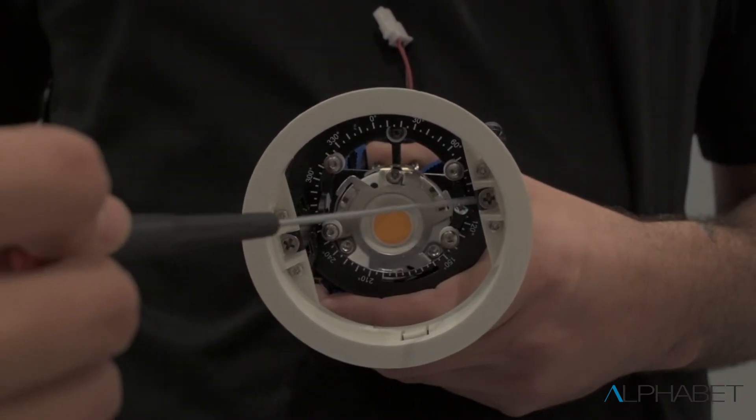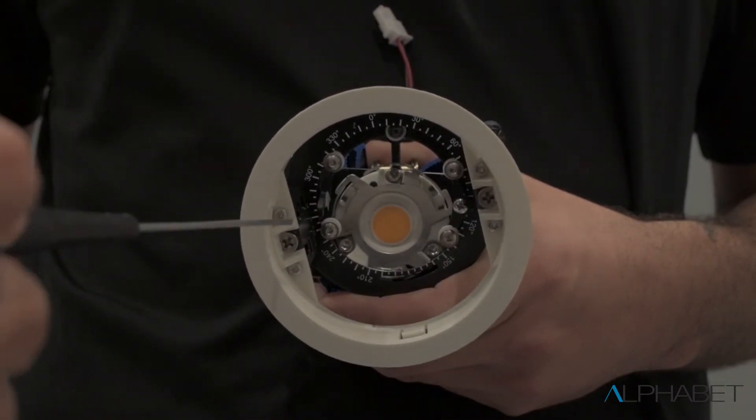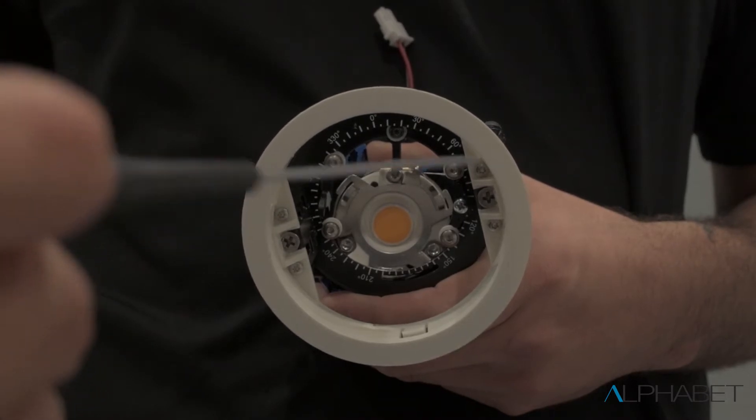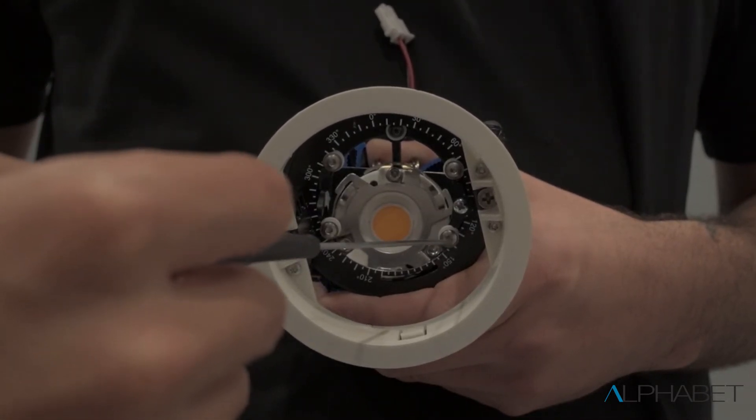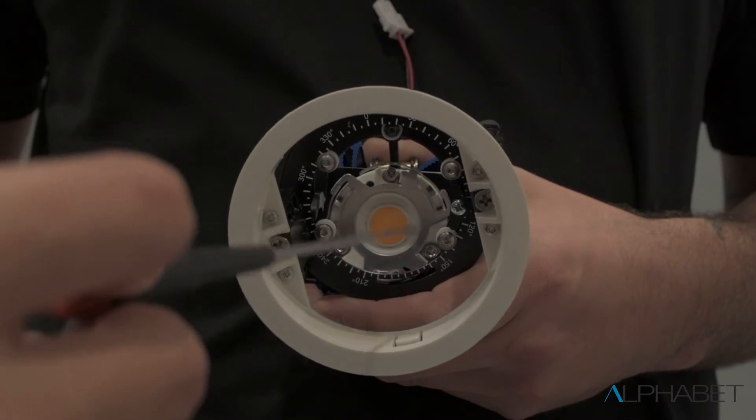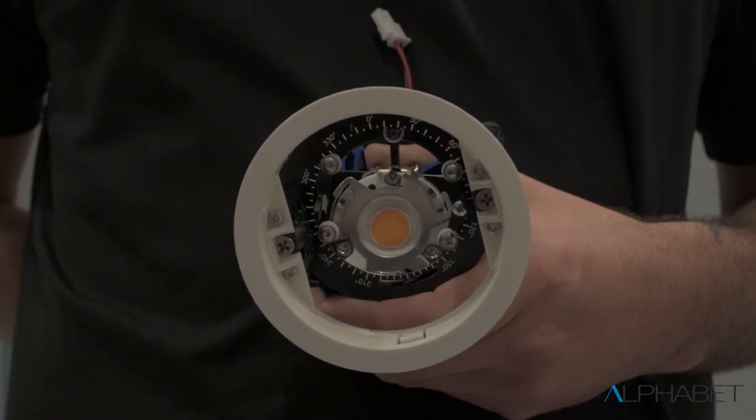These two Phillips head screws will be used to engage the wings and attach to the ceiling. The screw you see here will be used to lock and unlock the rotation. And finally, this screw will engage the tilt.